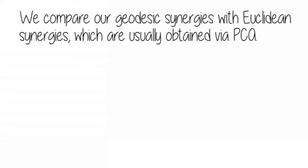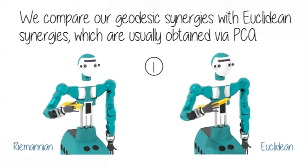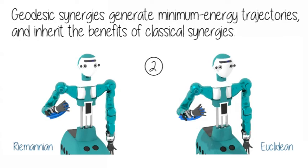We then compare our geodesic synergies with Euclidean synergies, which are usually obtained via principal component analysis. The Euclidean synergies start at the same joint configuration with the same velocity. As opposed to geodesic synergies, they generate trajectories with constant linear joint velocity.